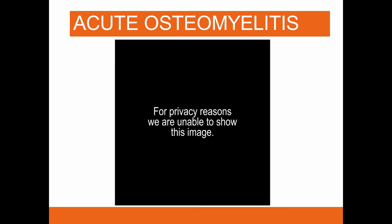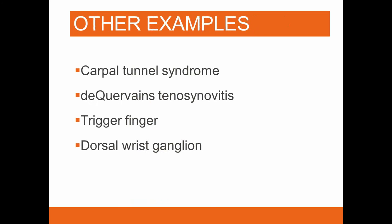Other examples include carpal tunnel syndrome, de Quervain's tenosynovitis of the thumb tendons, trigger fingers and dorsal wrist ganglia — all very common conditions. And equally, they all need the same things: proper diagnosis, a plan, a unified recovery plan, early management of any deviation, treatment, and then proper documentation. Any one of these cases can go well off the rails.